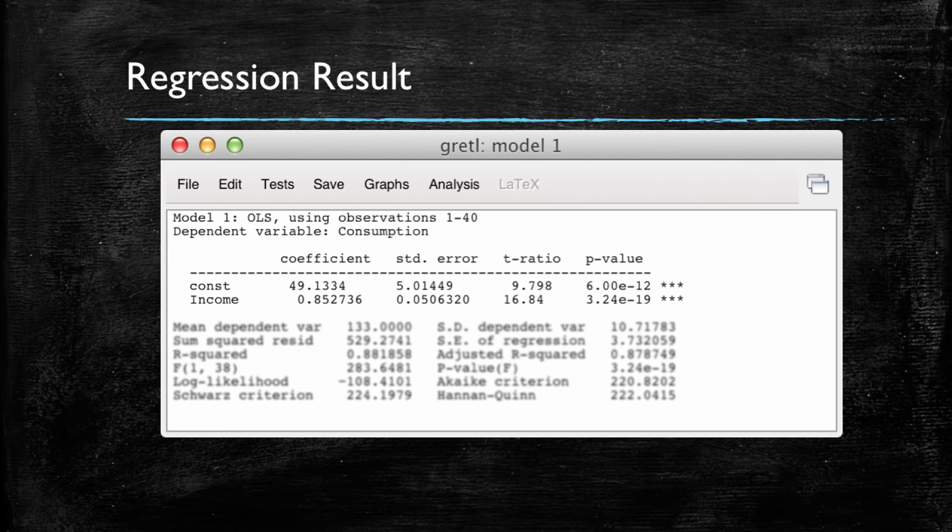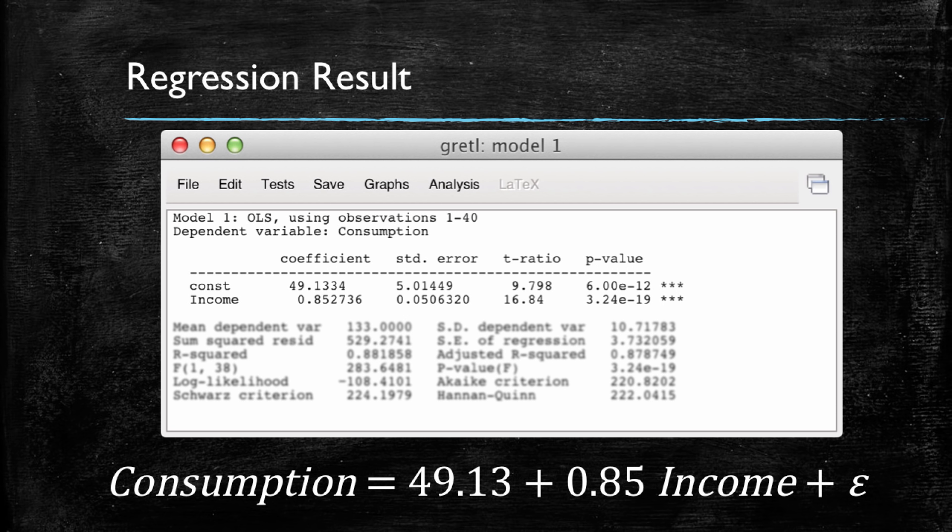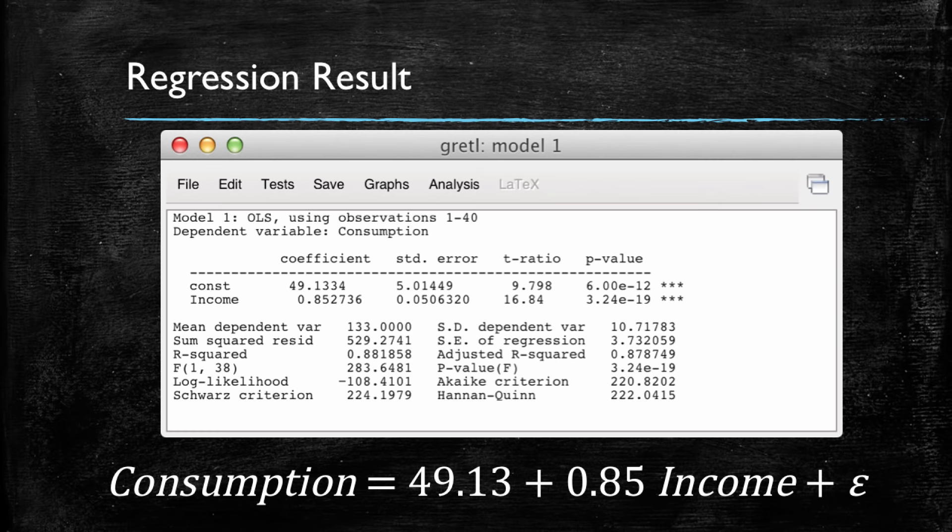If we wrote this into our equation, we would find that consumption equals 49.13 plus 0.85 times income plus the error term, which is going to be very important. Now, what do these numbers mean for our model, which tried to see how did income explain consumption?